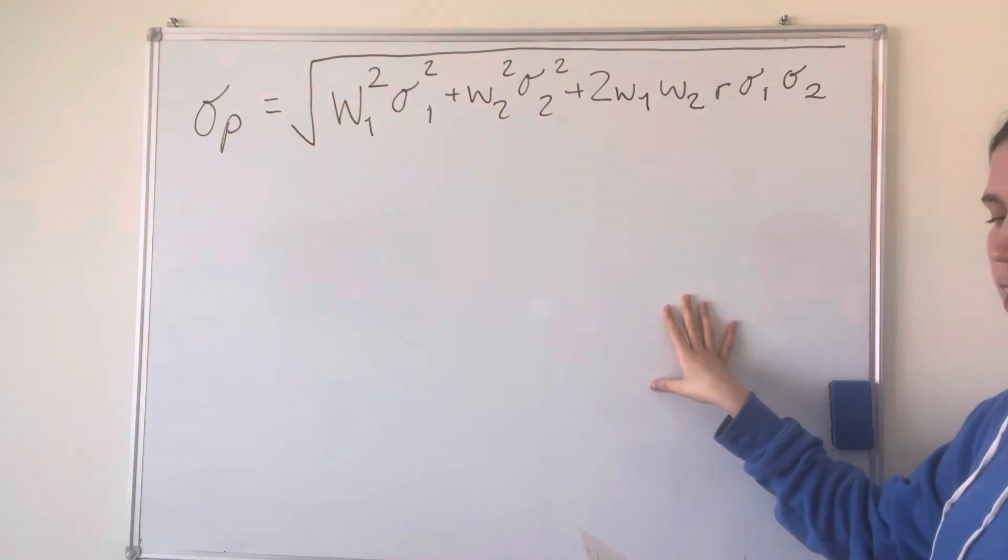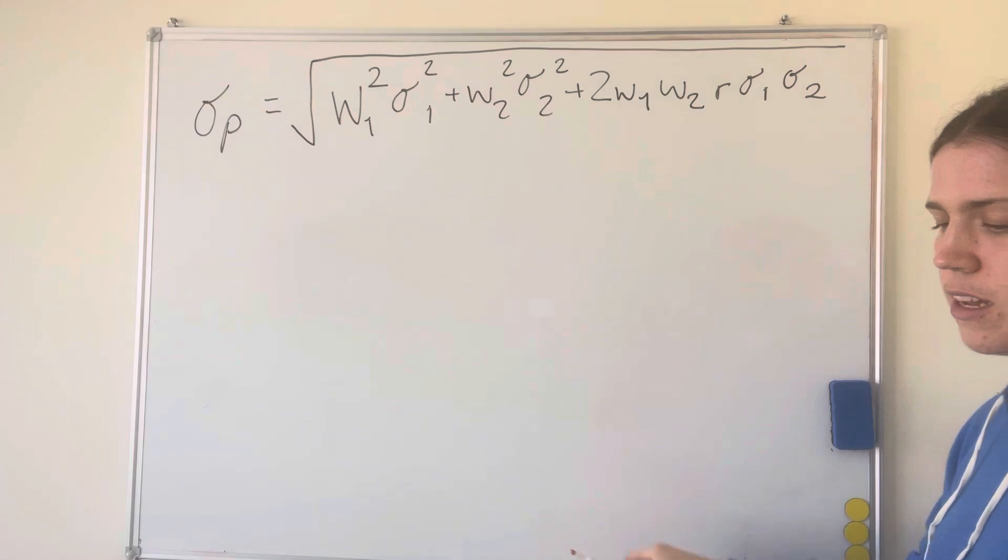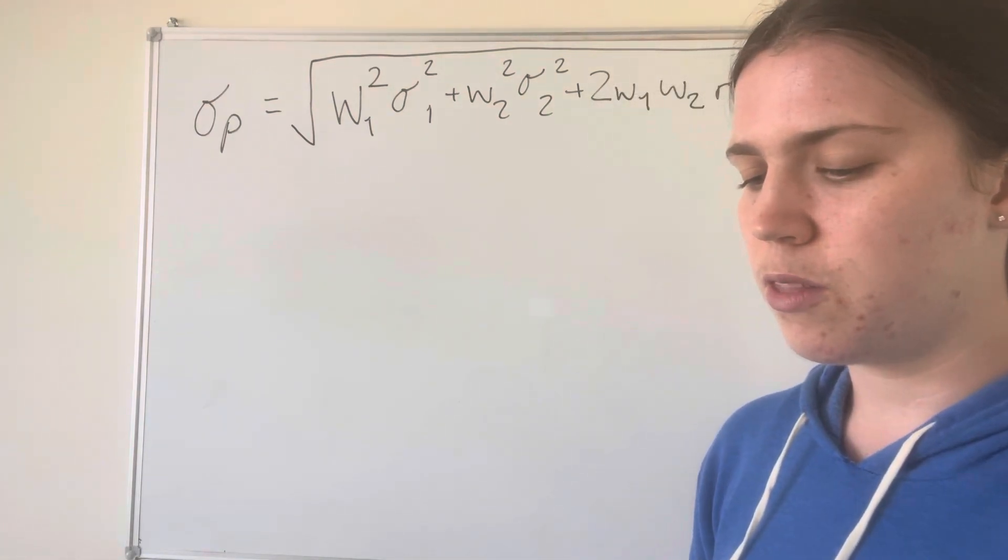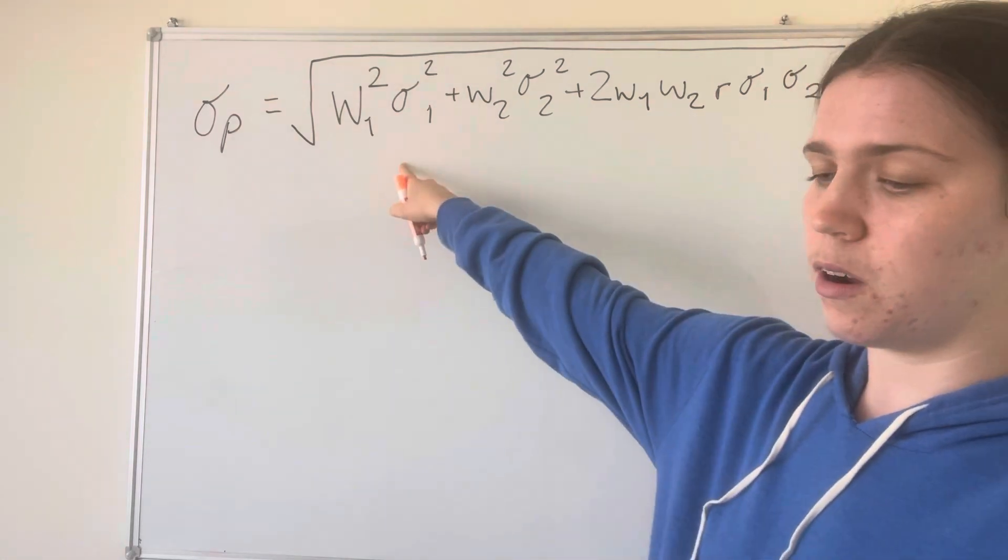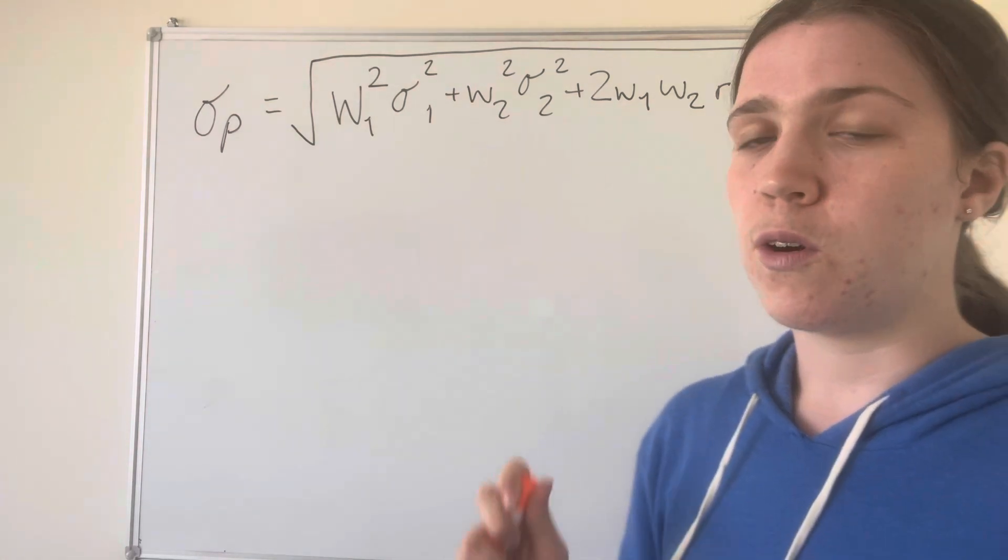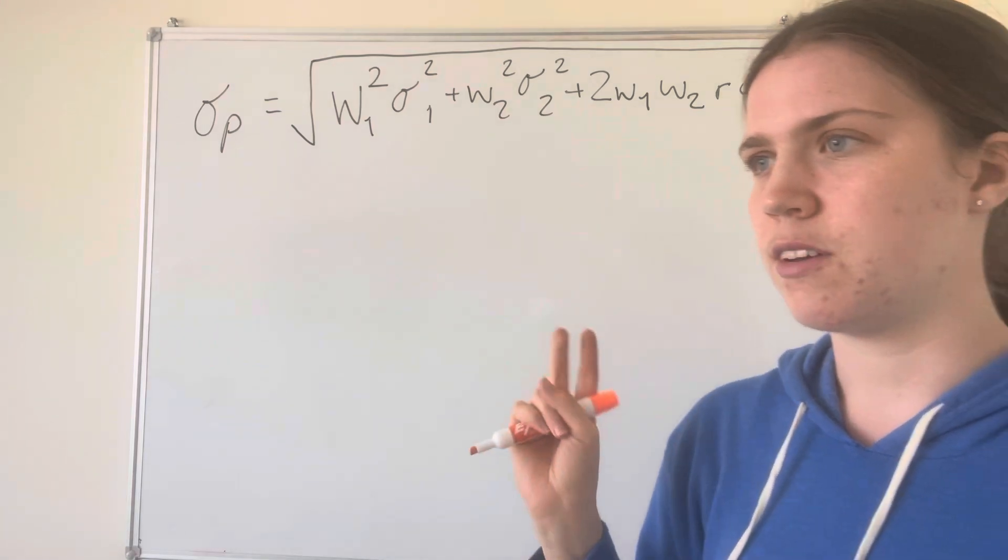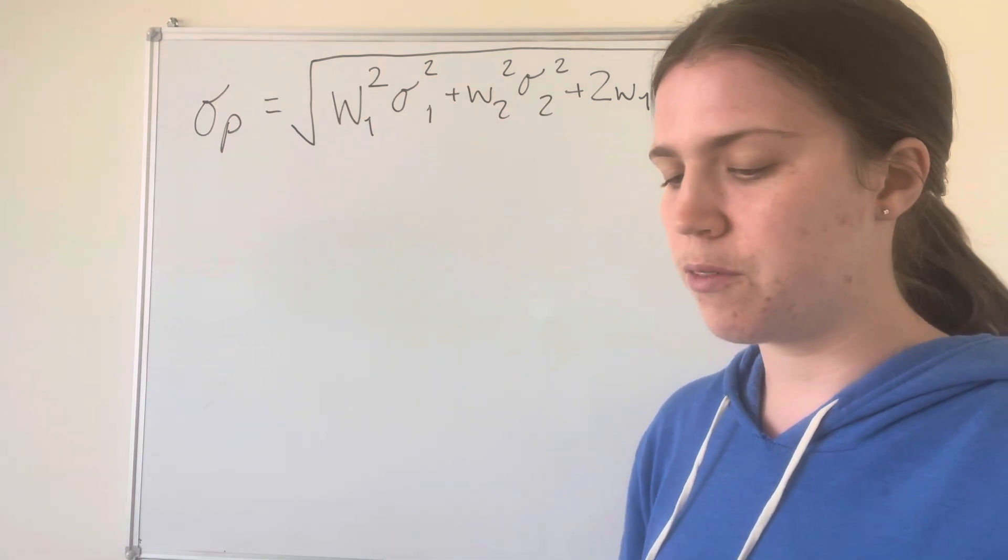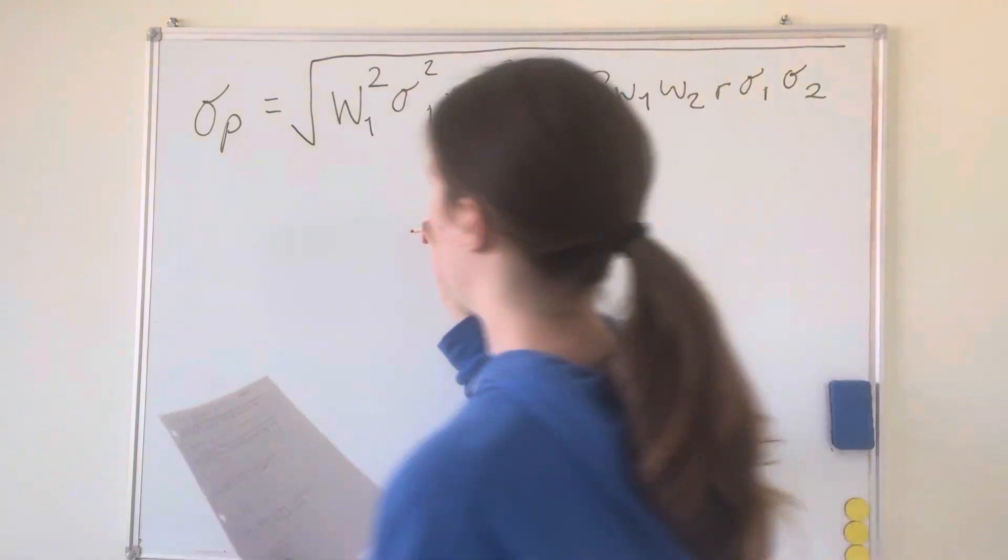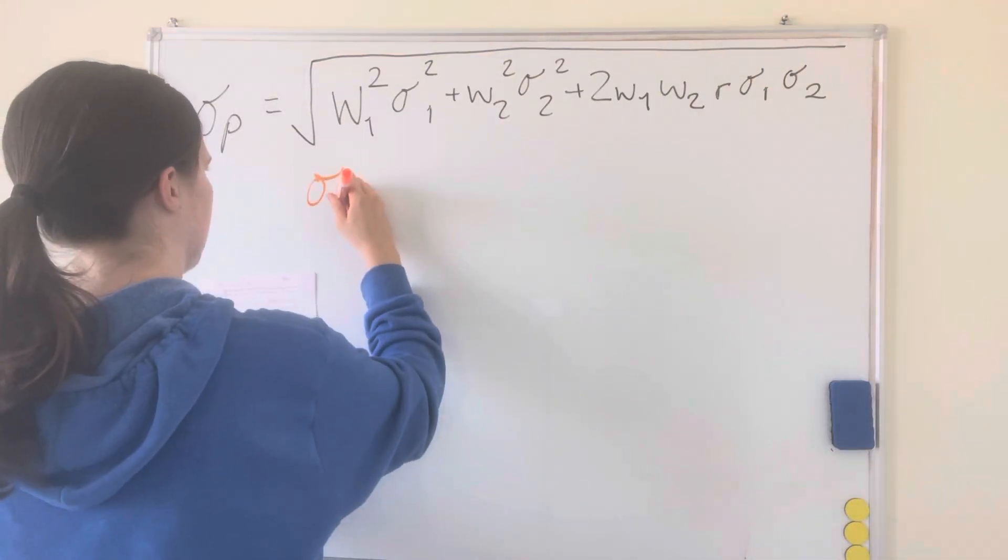The first set of information that we're given is that sigma 1 equals sigma 2. The 1 and the 2 for both our w and our sigma stand for asset 1 and asset 2, like if you're investing in just two things in the portfolio. So sigma 1 equaling sigma 2 will mean the risks of both assets are the same.